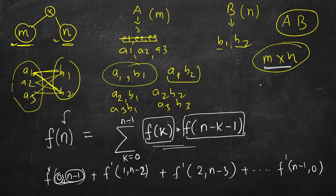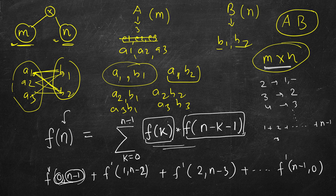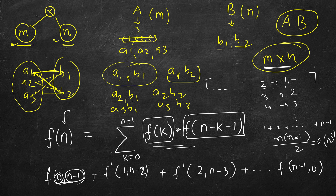The overall time complexity is O(n²) because for each value i we run an inner loop of about i iterations — summing one plus two all the way up to n minus one gives roughly n times n. The space complexity is O(n) since we store solutions from zero to n in the DP array, computing left to right and returning the final value.